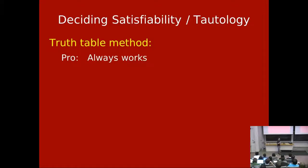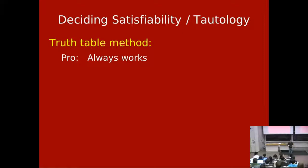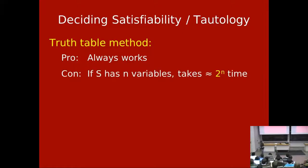The truth table method has pros and cons. One pro is that it always works. A con: if you have n variables, there are 2^n possible truth valuations. Eight variables is pretty much the limit of what you could conceivably write out by hand without going crazy. Constructing the truth table takes roughly 2^n work, which is a drag if n is even moderately large.